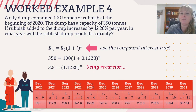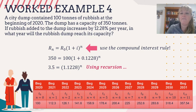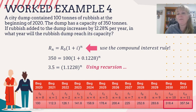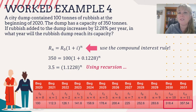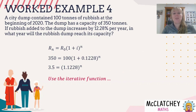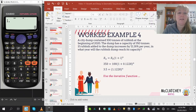We can solve for n using recursion, the iterative function on a calculator, or logarithms. Using recursion: at time zero (beginning of 2020) we have 100 tons. Working through each term, at n = 10 we get approximately 319 tons, and at n = 11 we get 357.54 tons — exceeding capacity. So the dump reaches capacity somewhere between 2030 and 2031, meaning during the year 2030 (the 10th year), it crosses the 350-ton threshold.